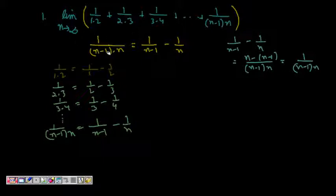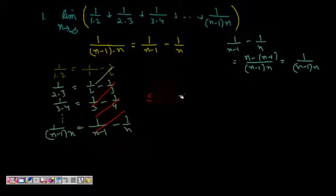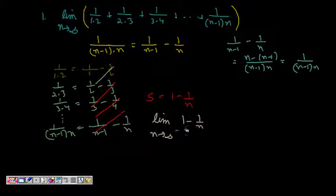If we sum them all, intermediate terms cancel — 1/2, 1/3, 1/4, up to 1/(n-1) all cancel. Hence the sum is 1 minus 1/n. The limit problem is now reduced to: limit n tends to infinity of (1 - 1/n). As n tends to infinity, 1/n tends to 0, and hence the limit is 1.